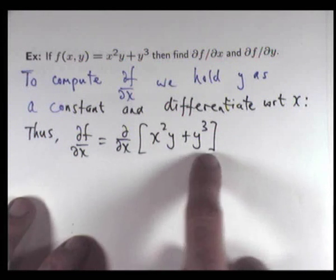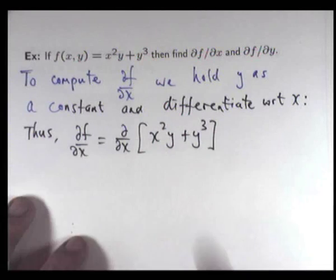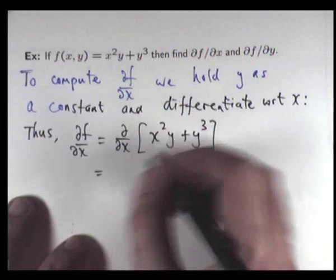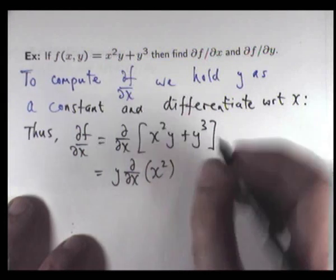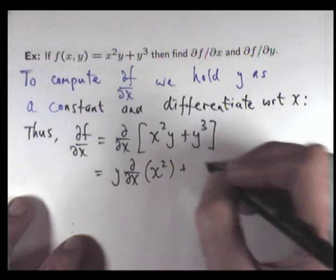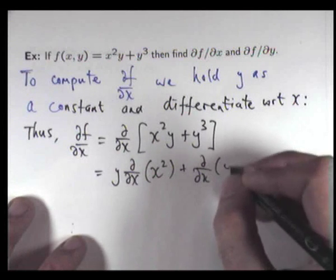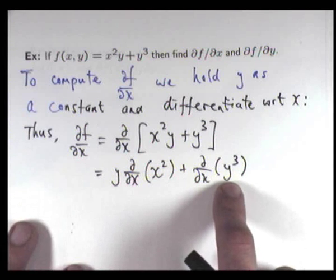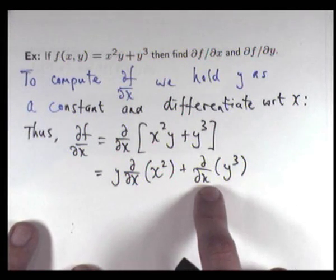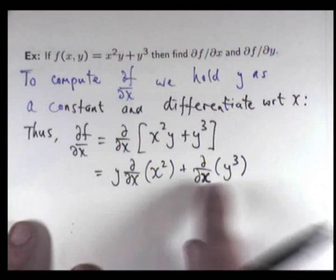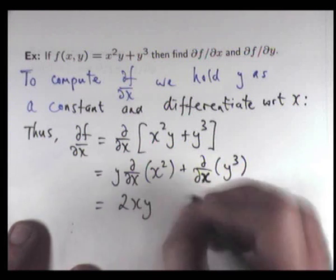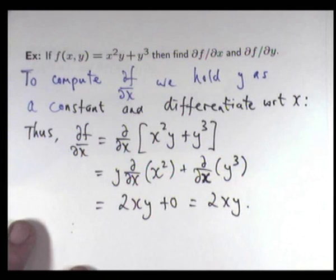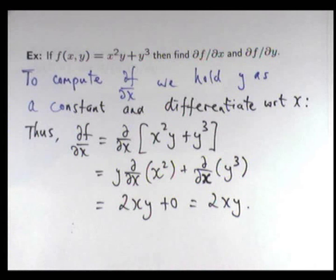We want to compute the partial derivative with respect to x. If y is a constant, then we can bring that first term out to the front. The derivative of y³ — well, y is just a constant, so y³ is going to be a constant. If we differentiate that with respect to x, this is going to be 0, and this term gives 2xy. So we've formed our partial derivative, and notice it's just a function of two variables.